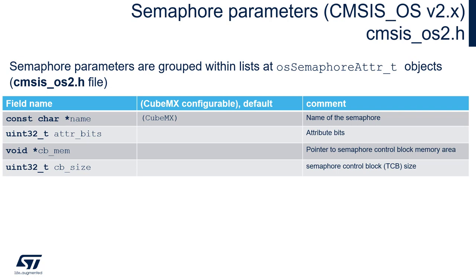Apart from the name, we can see the attribute bits, the pointer to the semaphore control block memory area, and the semaphore control block size. There is no other memory component, because the semaphore does not store anything on the stack apart from its control block. It's worth knowing where the pointer to this control block is and its size. The structure itself is defined within the cmsis_os2.h file, where you can find more details.